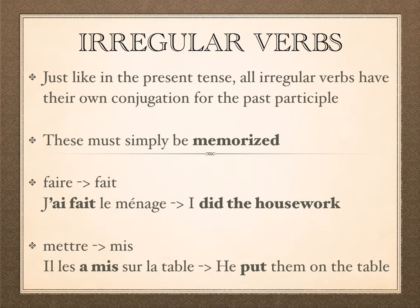Today we talked about our first two irregular past participles. Just like in the present tense, most irregular verbs will have their own conjugation for the past participle. However, just because a verb is irregular in the present tense does not necessarily mean that it is irregular in the past participle.